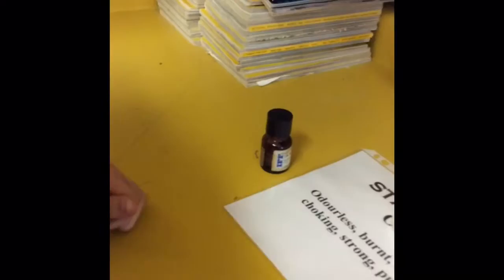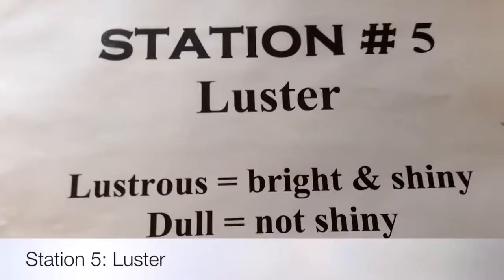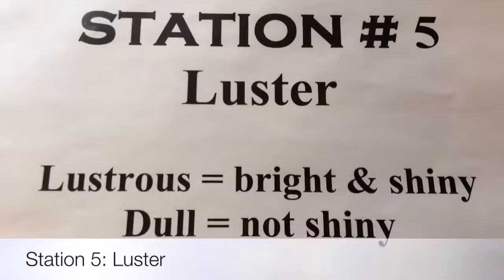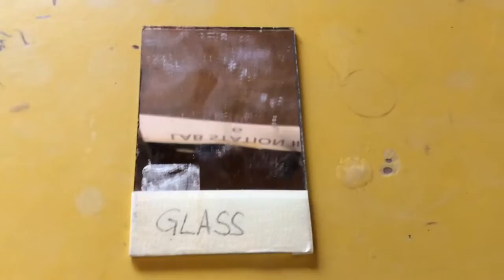The physical property we chose is luster. Luster is the brightness or shininess of an object. It's a qualitative physical property because it's not dealing with numbers. The glass is the most lustrous object because it's the most reflective and shiny.